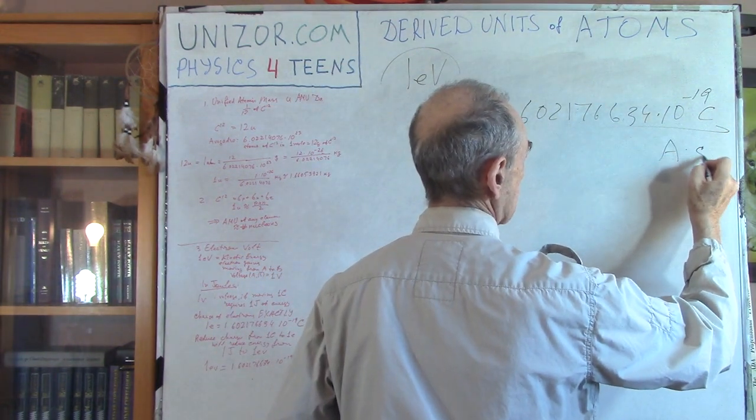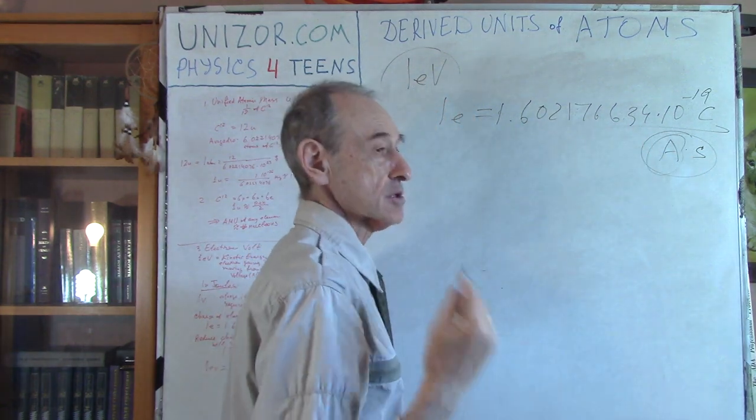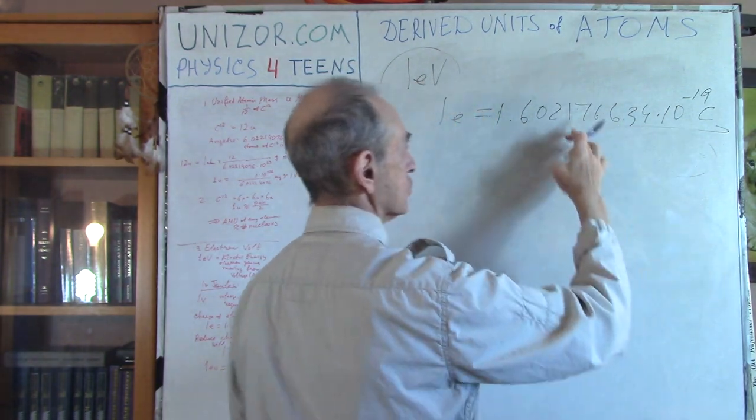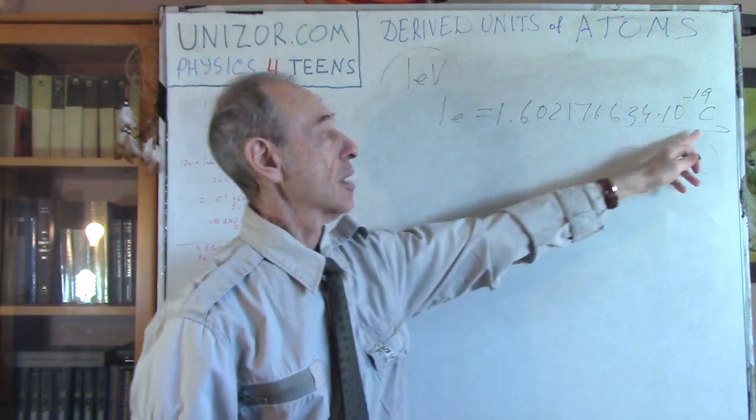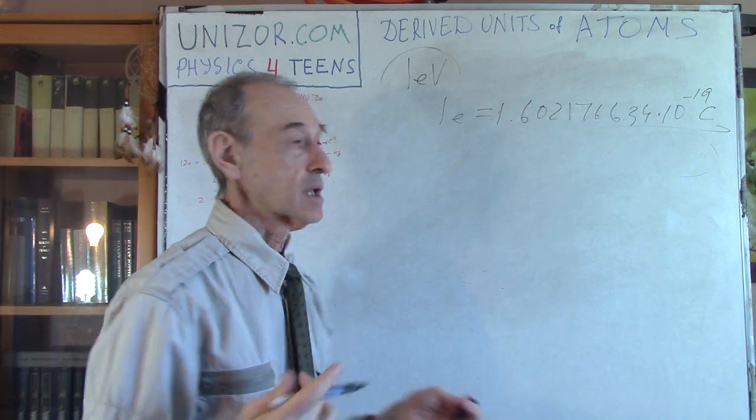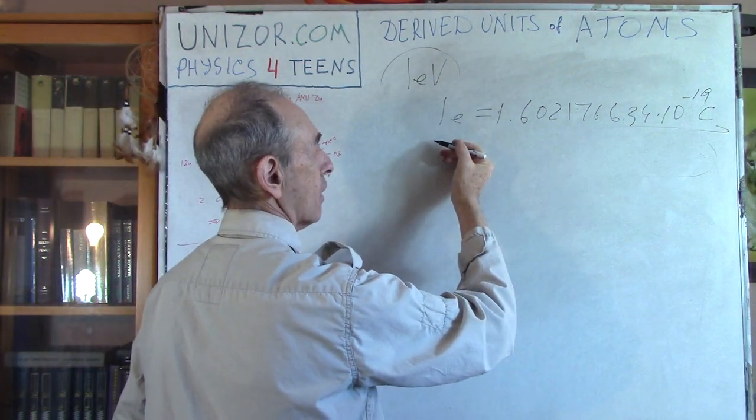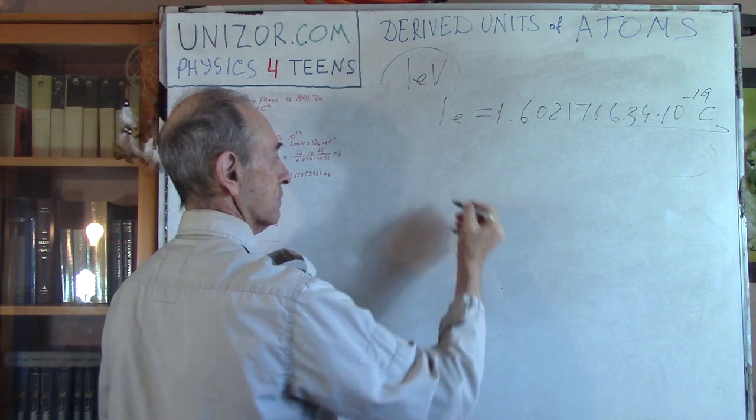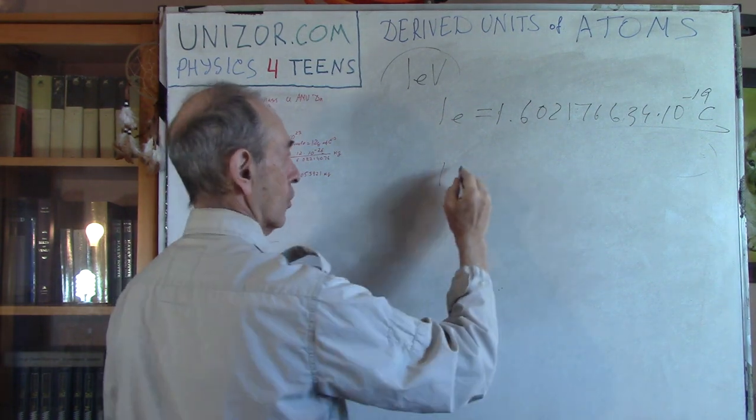Coulomb is actually ampere second, ampere times second. That's what Coulomb, one Coulomb is. And one ampere was defined using the same constant. So basically that's the immediate consequence which I put in that lecture, that one electron is exactly this number of Coulomb.